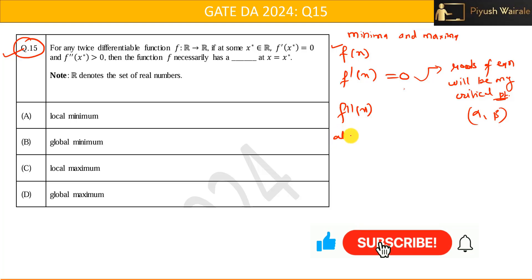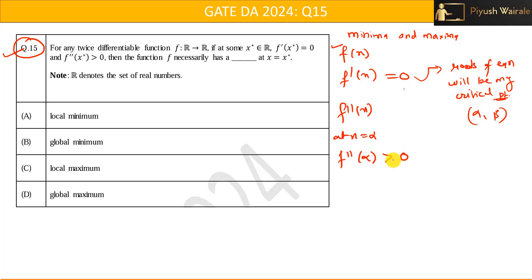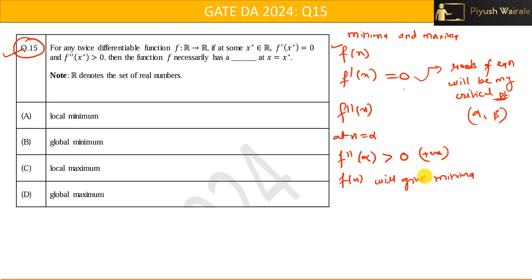Now, at x equals alpha, if f''(alpha) is greater than 0 — that is positive — then f(x) will give a minima at that point, and the minimum value is found by substituting alpha into f(x). On the other hand, if f''(alpha) is less than 0 — that is negative — then f(x) will give a maxima.